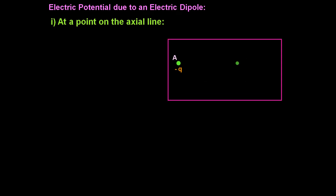Let us see an electric dipole consisting of two charges, minus q and plus q. Let us name the points as A and B. The electric dipole's strength is represented by the dipole moment, denoted by the symbol p. Its direction is pointing from negative to positive charge, as represented here. Let O be the center of the dipole, and a be the distance of each charge from its center, so that the total distance between minus q and plus q will be 2a.